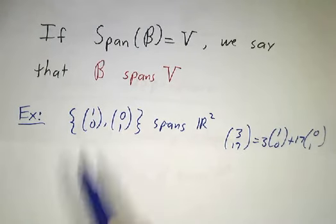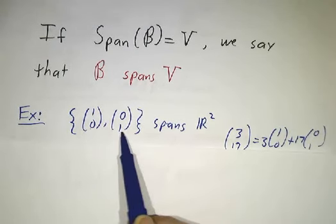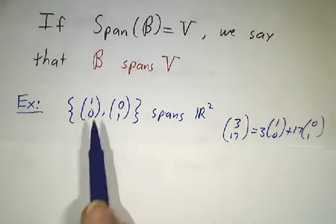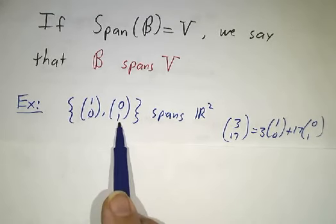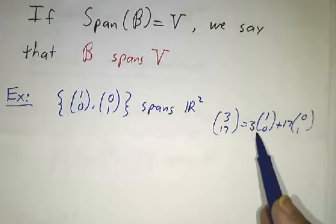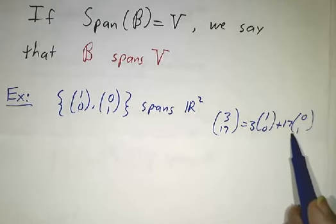So in R², (1, 0) and (0, 1) span the vector space because absolutely any vector can be written as a linear combination of (1, 0) and (0, 1). If you want to get the vector (3, 17), you just take 3 times (1, 0) plus 17 times (0, 1).